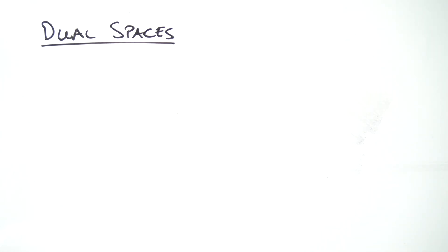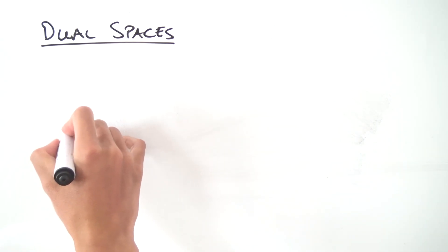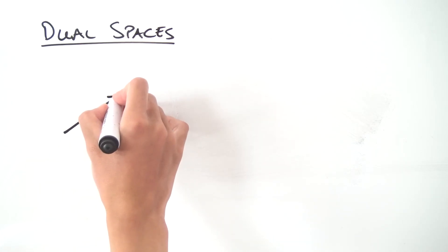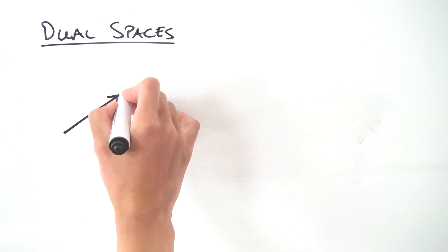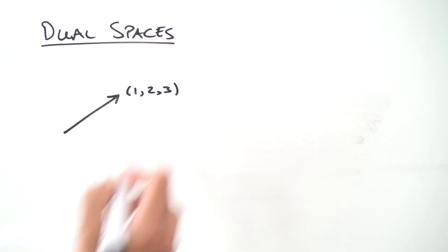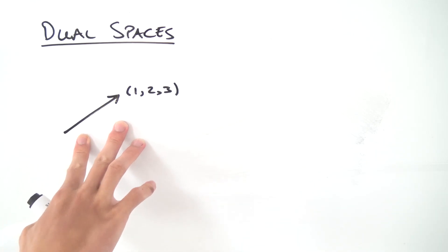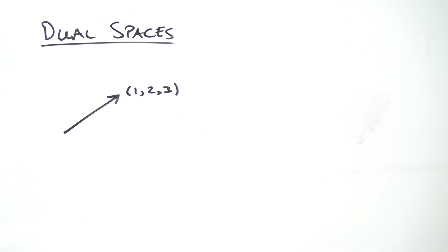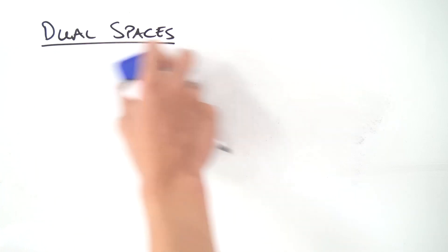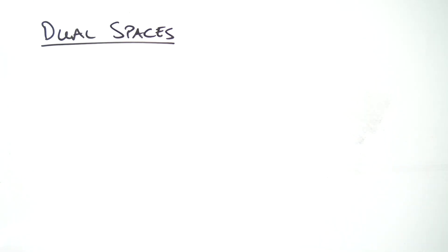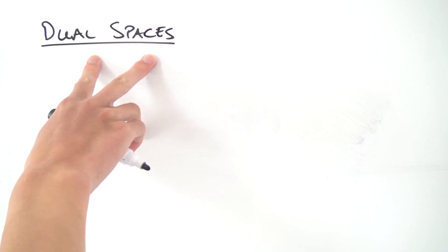Greetings everybody, and today we're going to be taking a look at these mysterious dual spaces. Back when I was trying to learn this for the first time, I think it was back in high school, I thought vectors were just these pointy arrows in space with numbers labeling them — like 1, 2, 3. That's how you're taught about vectors in high school, and I thought vector spaces were just the set of all such vectors. But it turns out that's the absolute wrong way to think about vectors and vector spaces, and you should really understand the proper abstract description of vector spaces to make learning this topic a little bit easier.